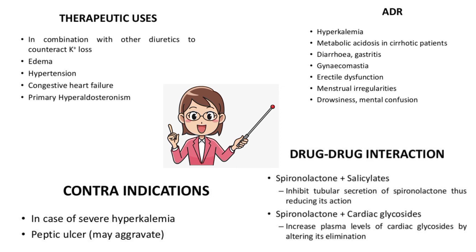The next drug interaction is with cardiac glycosides. Spironolactone increases the plasma level of cardiac glycosides by altering their elimination. These two interactions — with salicylates and cardiac glycosides — are important for spironolactone.